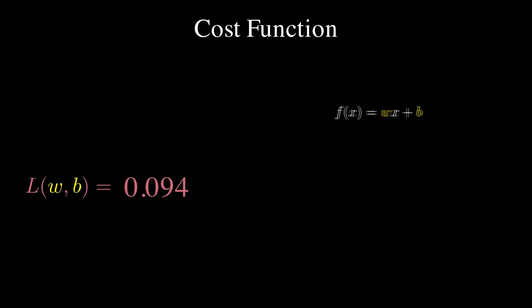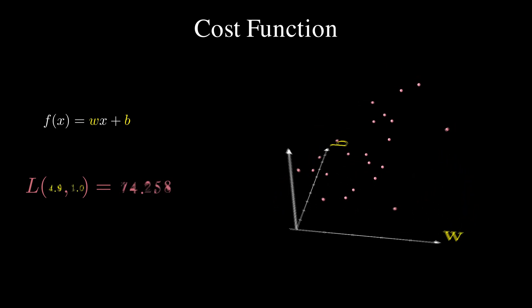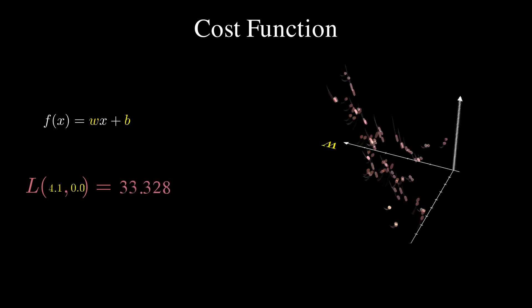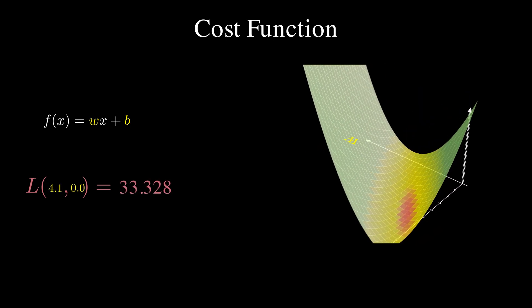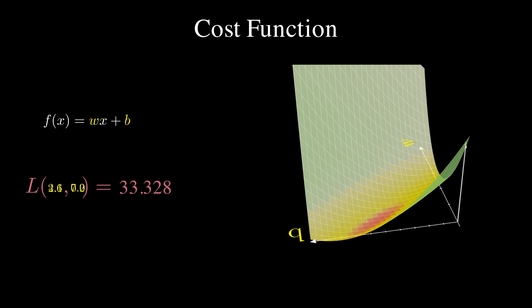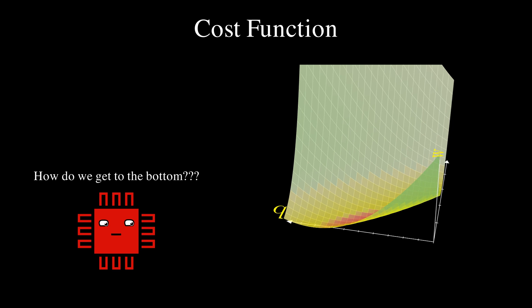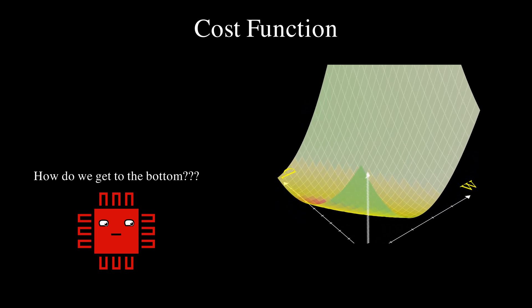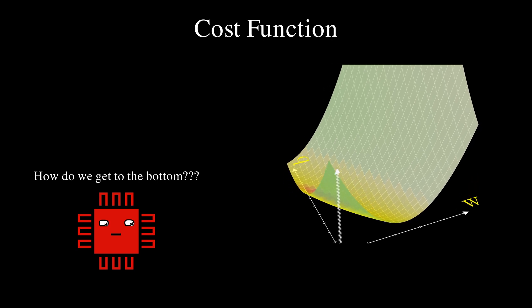It would be interesting to see the range of mean squared error values for different W and B values. So what I'm doing here is just randomly select WB pairs and evaluate the mean squared error. As I keep adding the dots, you can see that it has started to take a bowl-like shape. Let me just fill the space up and display the results as a 3D surface plot. From this, we can see that what we need is a way to find the bottom of this bowl-like surface. In doing so, we'll minimize the error and find a model that fits the data best.